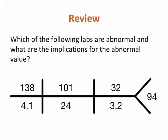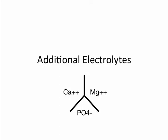Let's review. Which of the following lab values are abnormal and what are the implications for the abnormal value? In this case, the blood urea nitrogen and serum creatinine are elevated, suggesting that something may be wrong with the kidneys. Here are some additional electrolytes and their fishbone representation, which will be covered in the fluid and electrolyte lecture later in the semester.